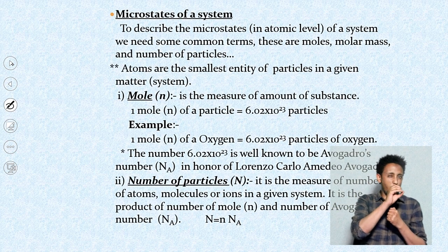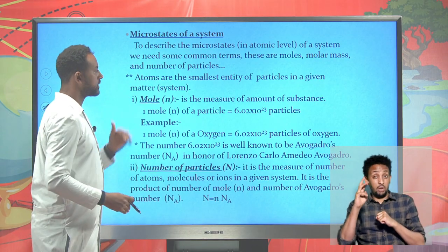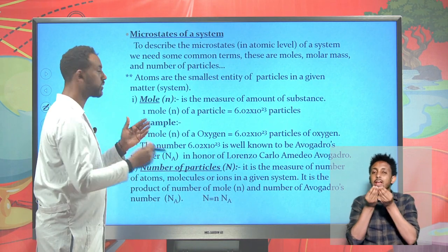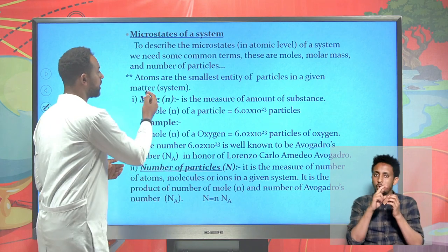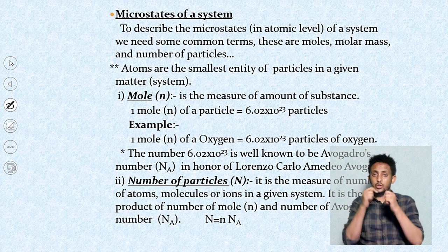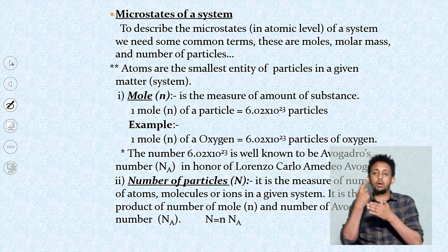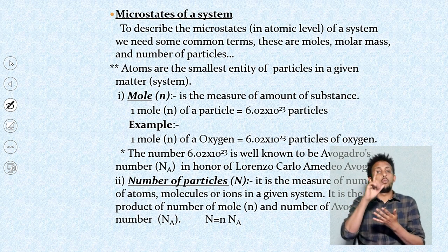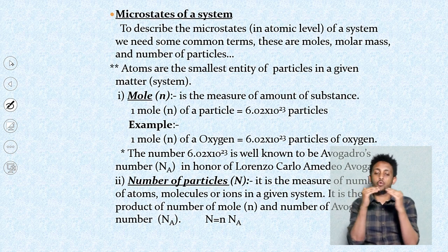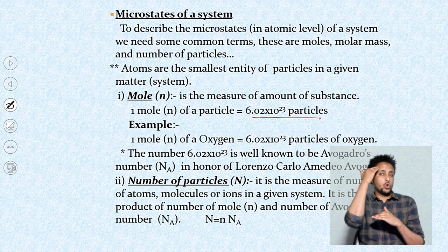It is possible to investigate a system at the micro or atomic level. Atoms are the smallest entities of a given matter or system. When investigating particles in a system, there are basic terms like mole, molar mass, and number of particles. Mole is a measure of amount of substance - one mole is equivalent to 6.02 × 10²³ particles. This is the well-known Avogadro's number.